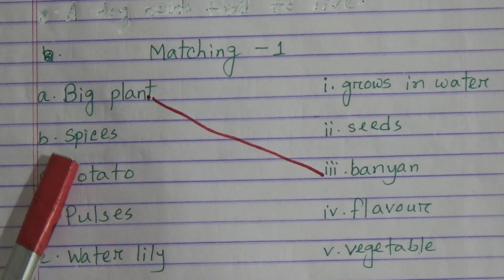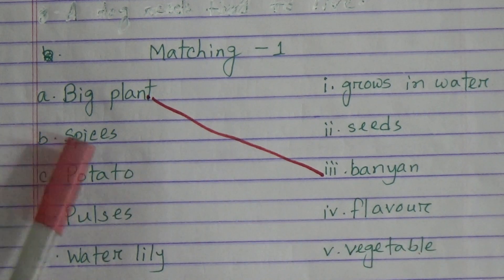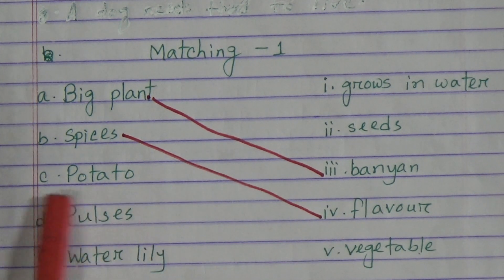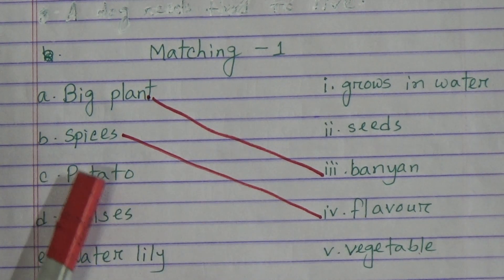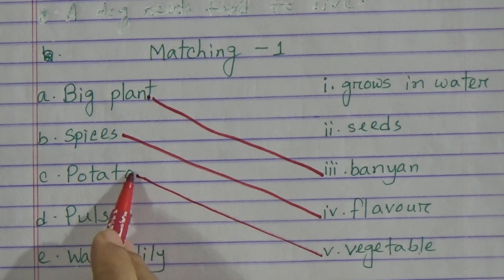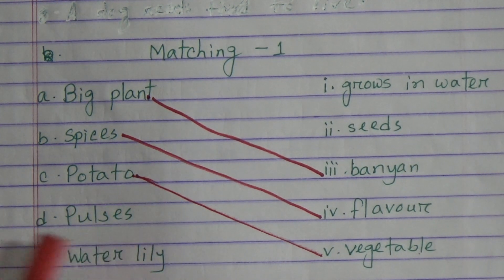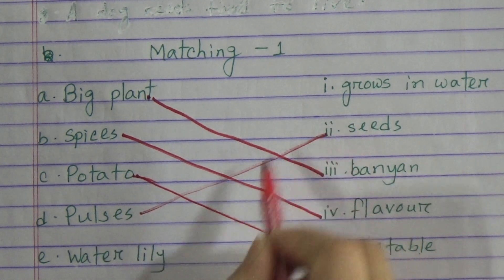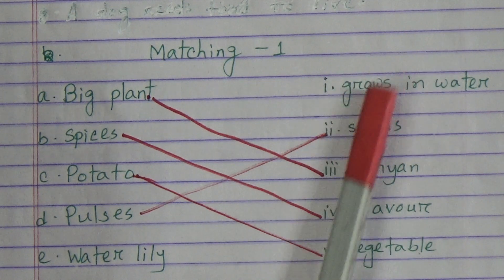Number B, spices, will be matched with flavor — that means number B will be matched with number 4. Number C, potato — we know potato is a vegetable — that means number C will be matched with number 5. Number D, pulses — we know pulses are seeds — so number D will be matched with number 2. Number E, water lily, will be matched with number 1 — grows in water.